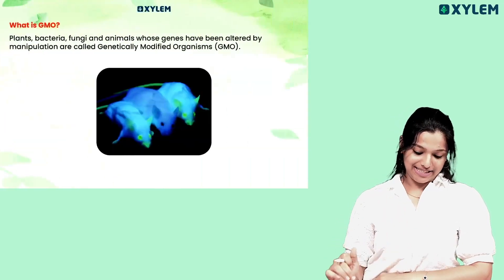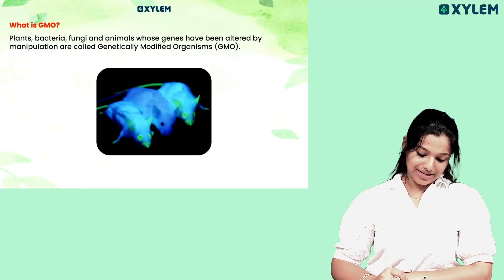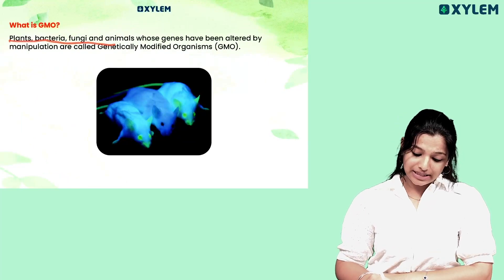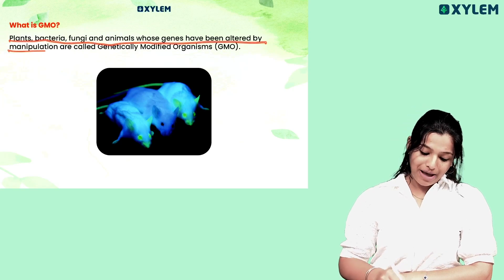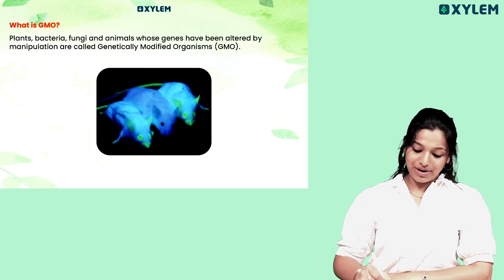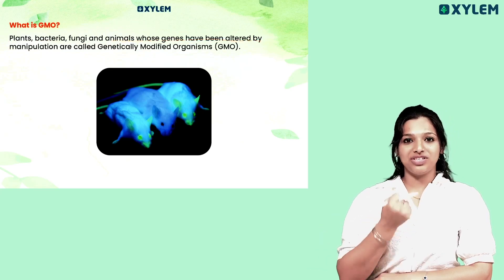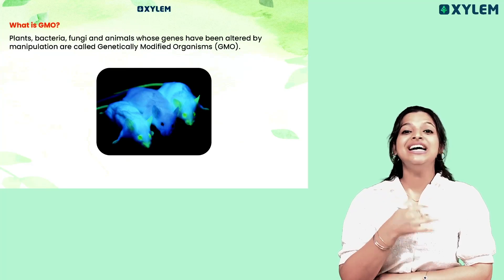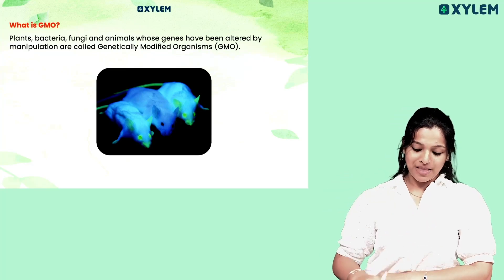What is GMO? Genetically modified organisms — plants, bacteria, fungi, and animals whose genes have been altered by manipulation — are called genetically modified organisms. The genes are altered and modified.